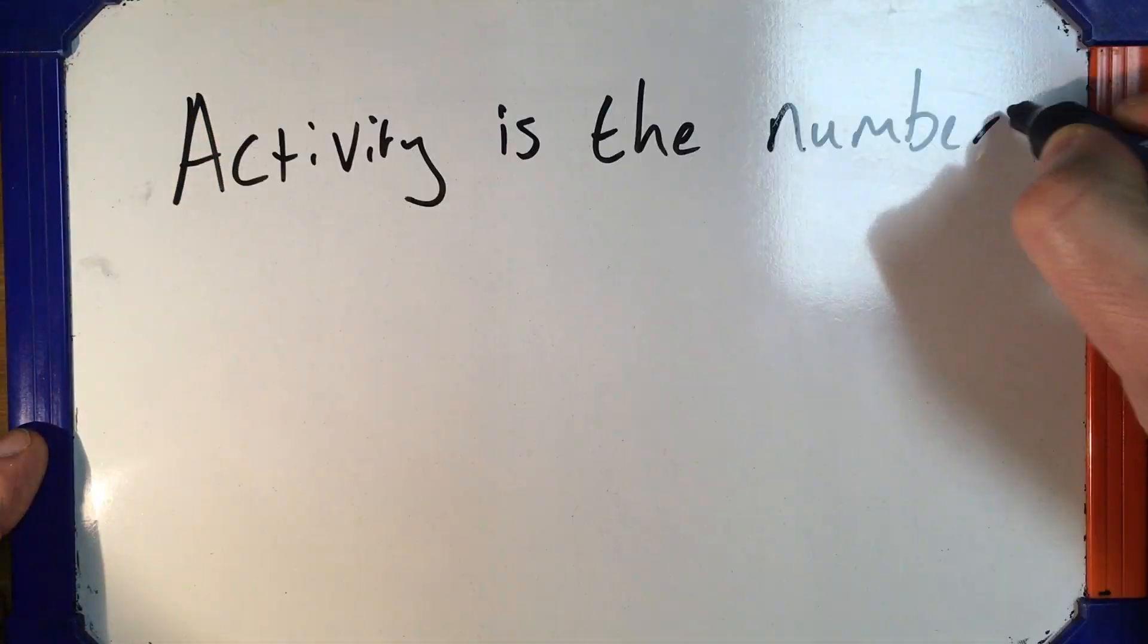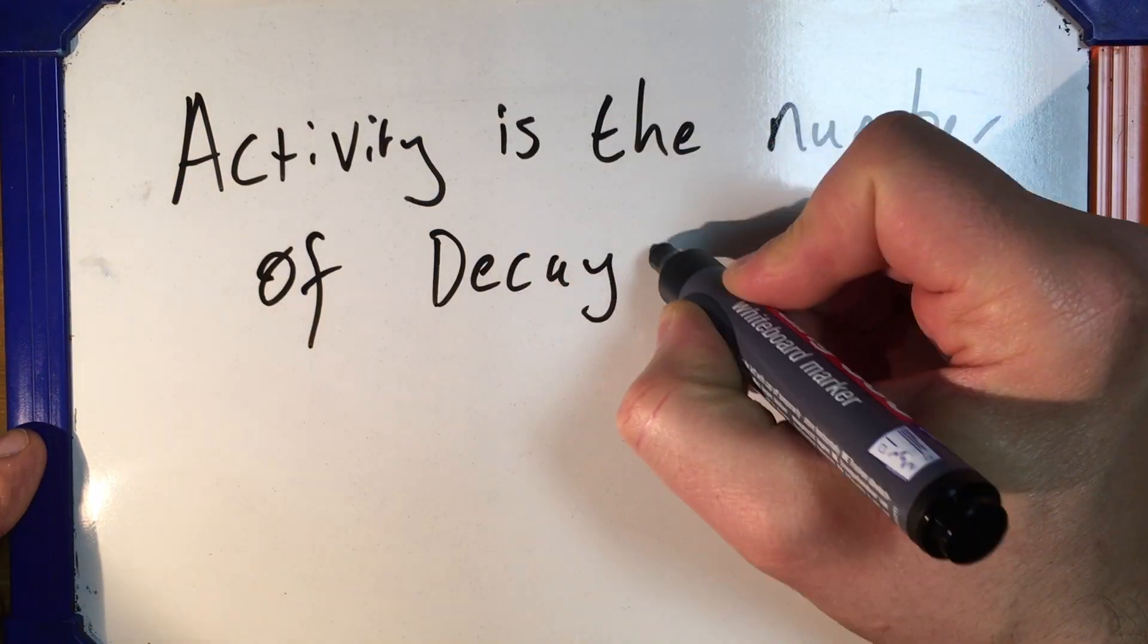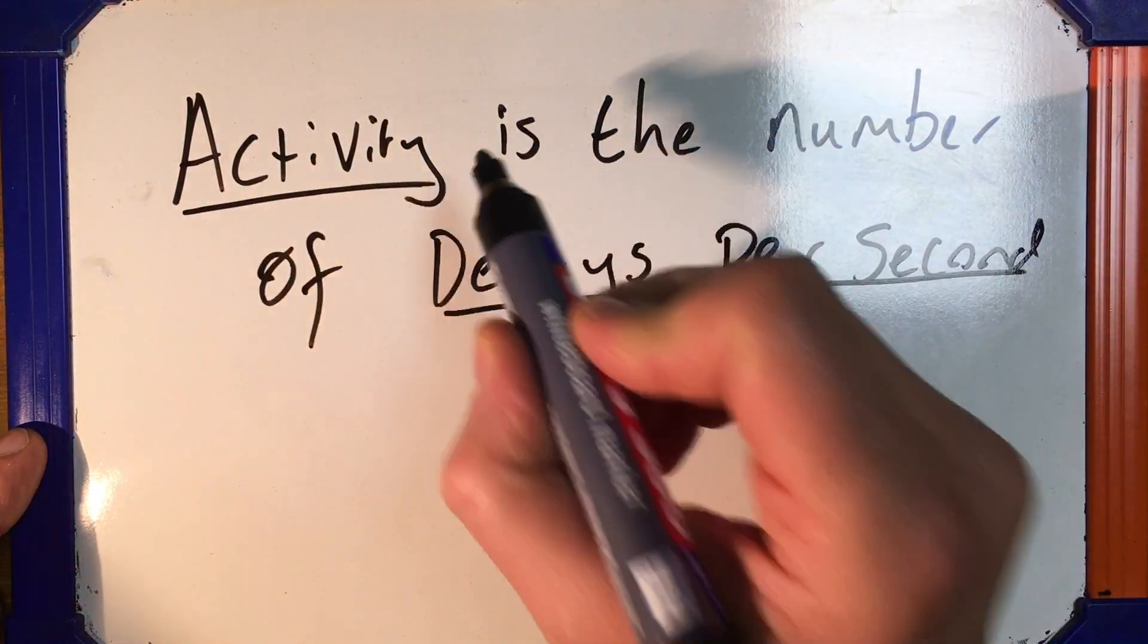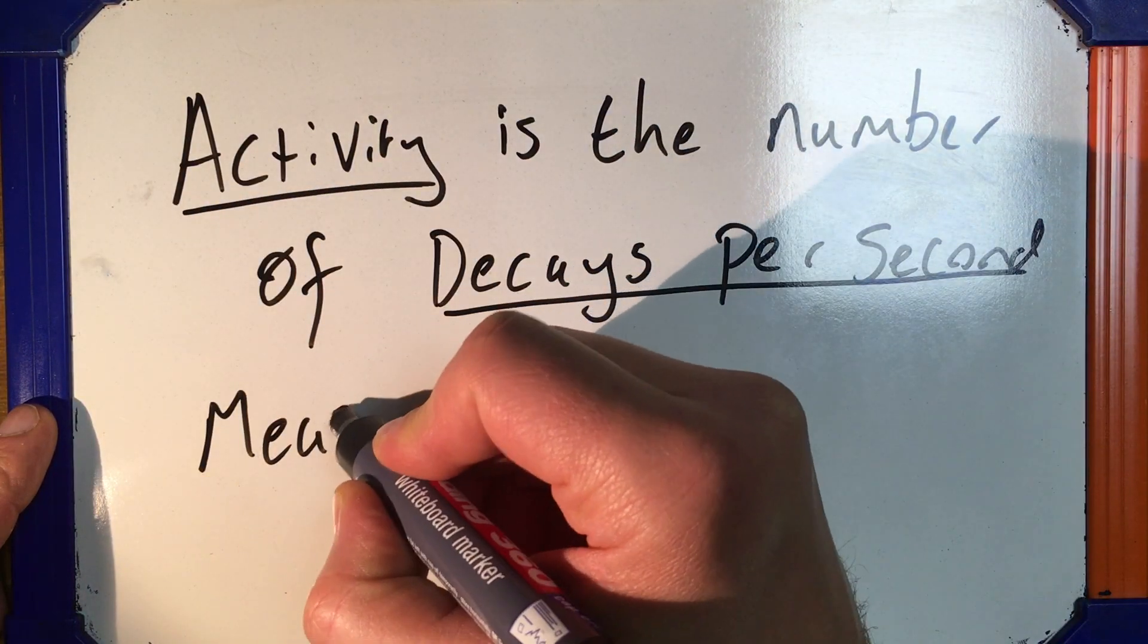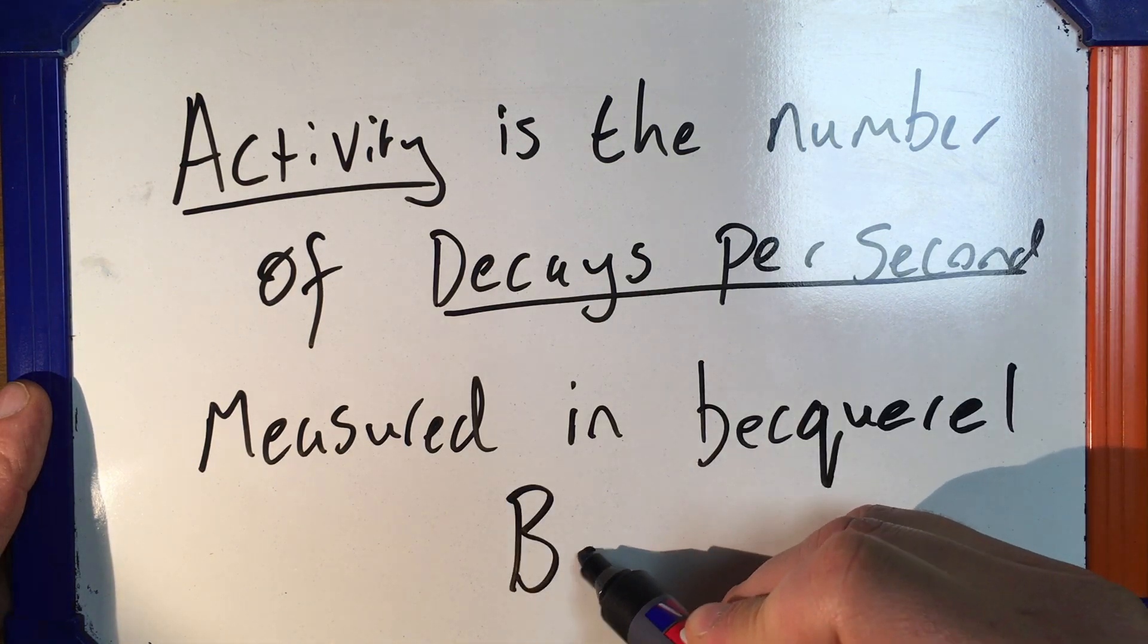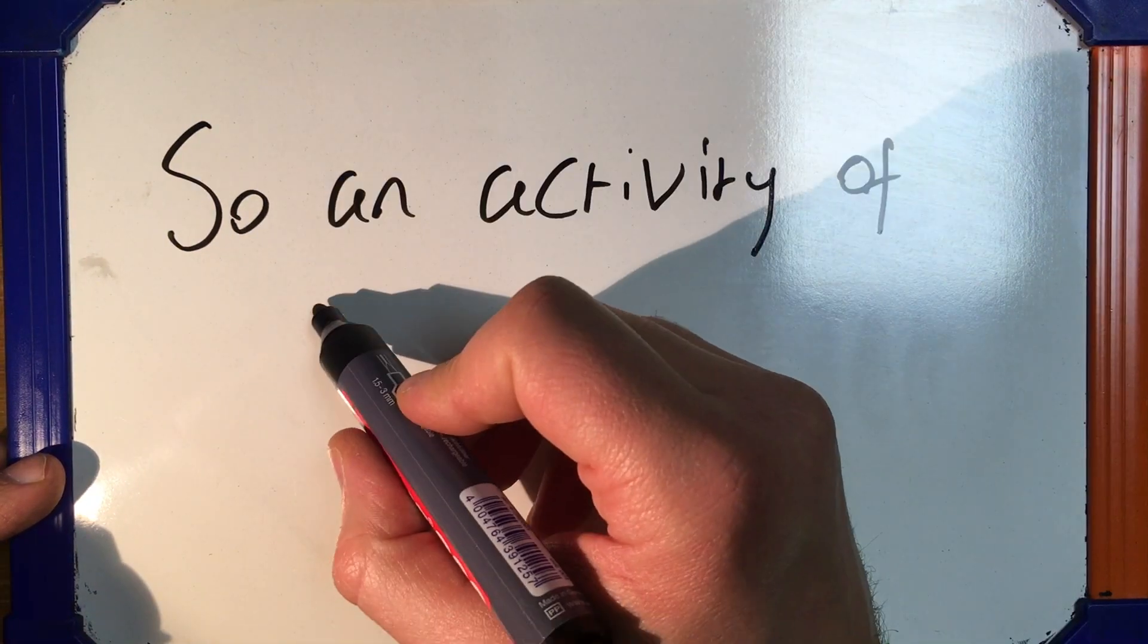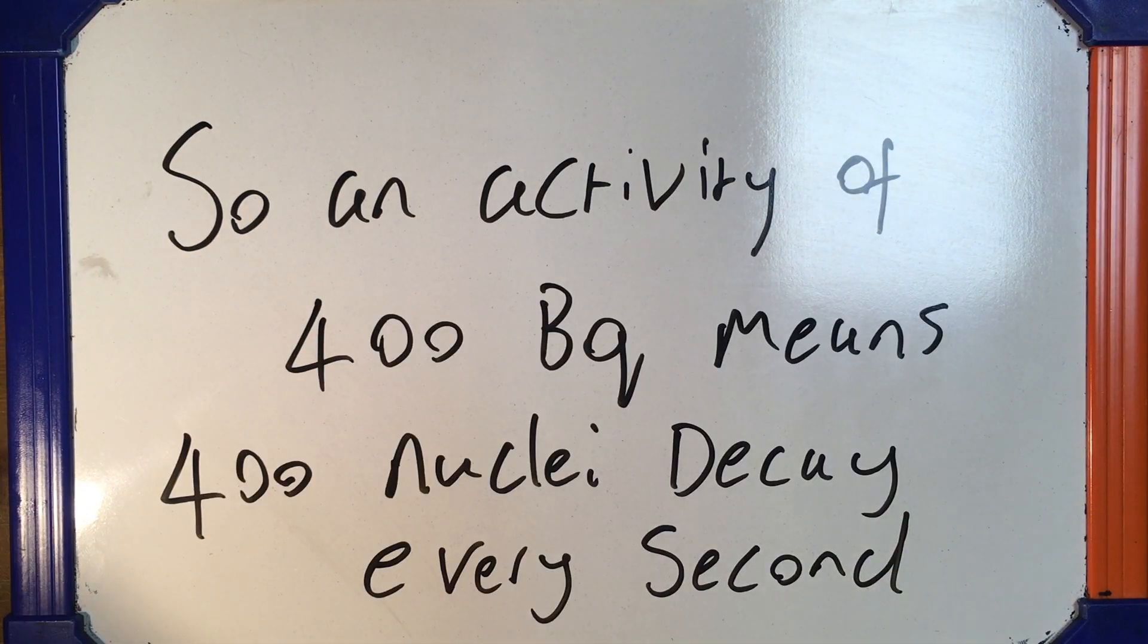We also need to talk about what activity means. Activity is the number of decays that you get every second. And we measure this in becquerel, which has got the units big B, small Q. So an activity of 400 becquerels means that you've got 400 nuclei decaying every second.